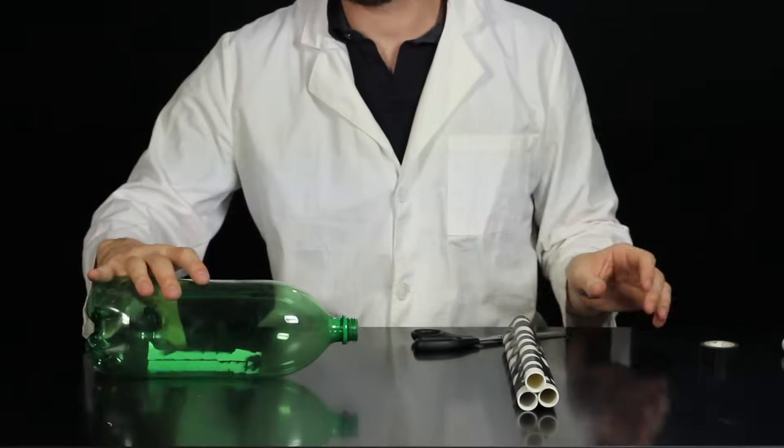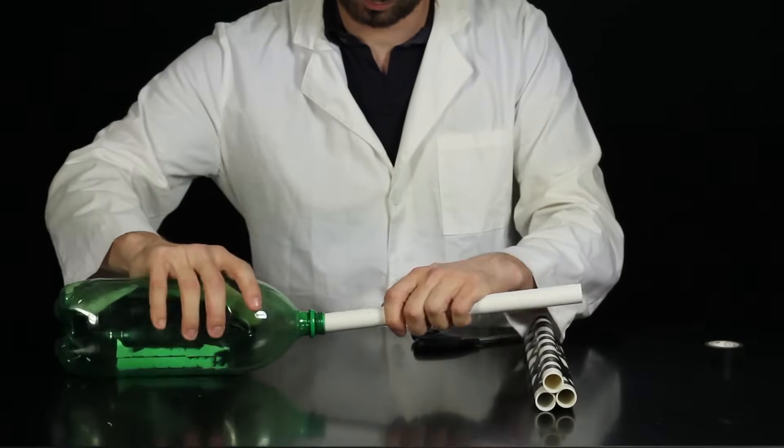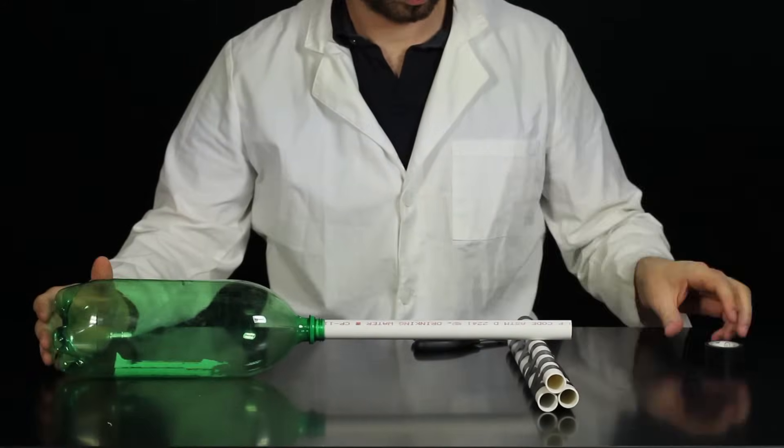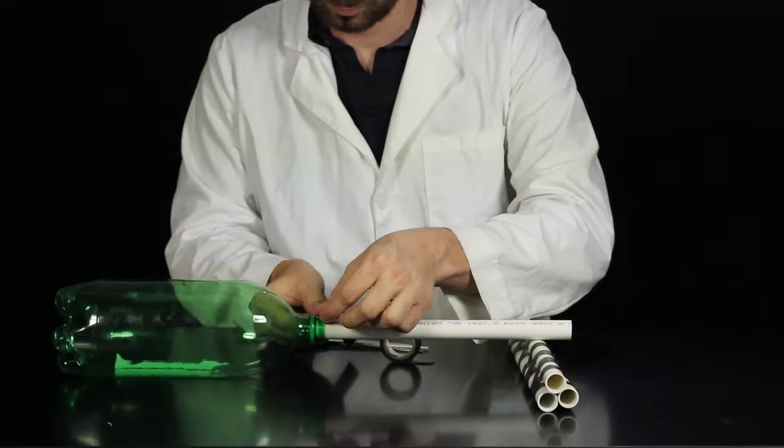Once you have your base constructed, take the 2-liter bottle and insert a section of 1.5-inch PVC pipe. It should be a very snug fit, however it's still a good idea to use electrical tape so that this connection doesn't come loose during launching.